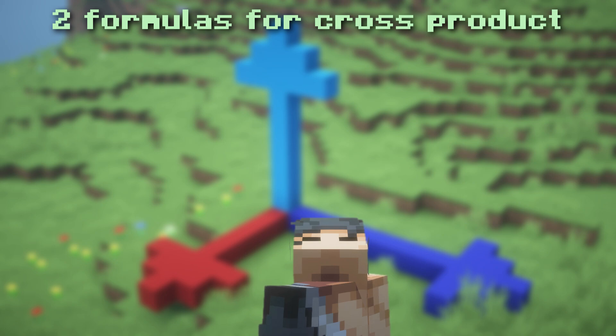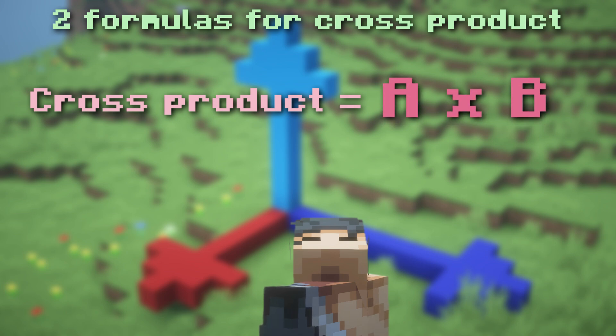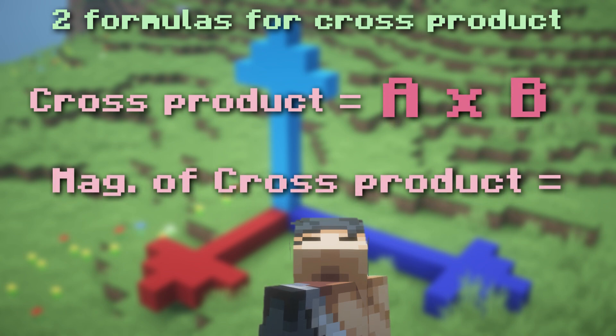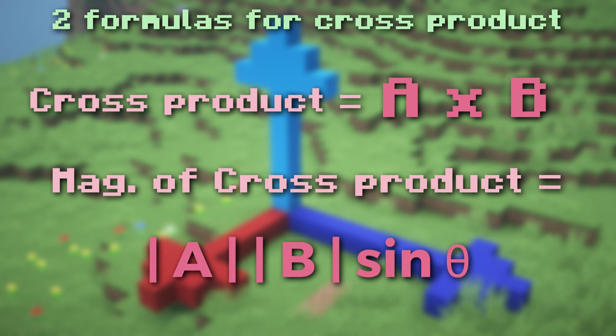For now, let's learn the two formulas to calculate cross products. If we assume vector A and vector B to be 3D vectors, the two formulas to find the cross product are A cross B, and for the magnitude of the cross product, the magnitude of A times the magnitude of B times sine theta.